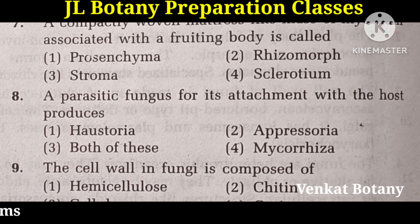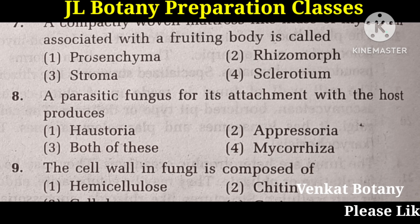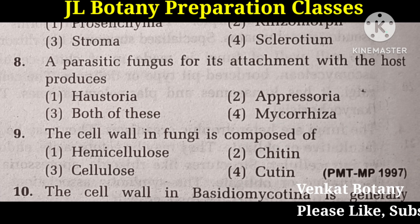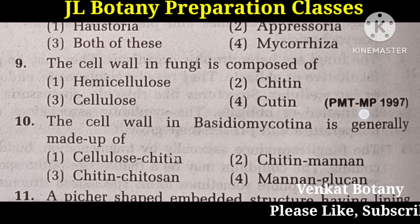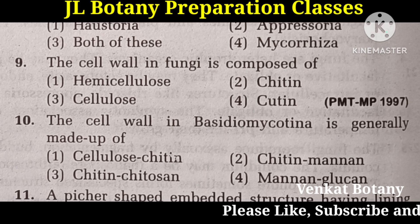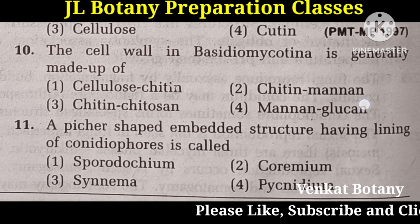A parasitic fungus, for its attachment with the host, produces Appresoria. The cell wall in fungi is composed of Chitin. The cell wall in Basidiomycotina is generally made up of Chitin-mannan — the second option is the right one.